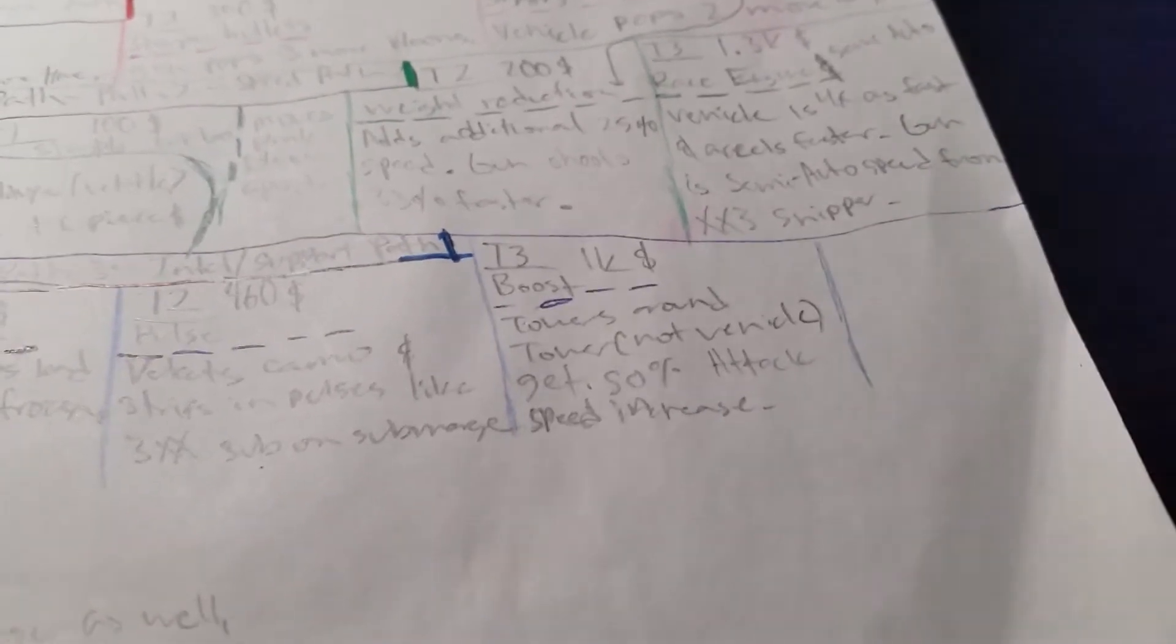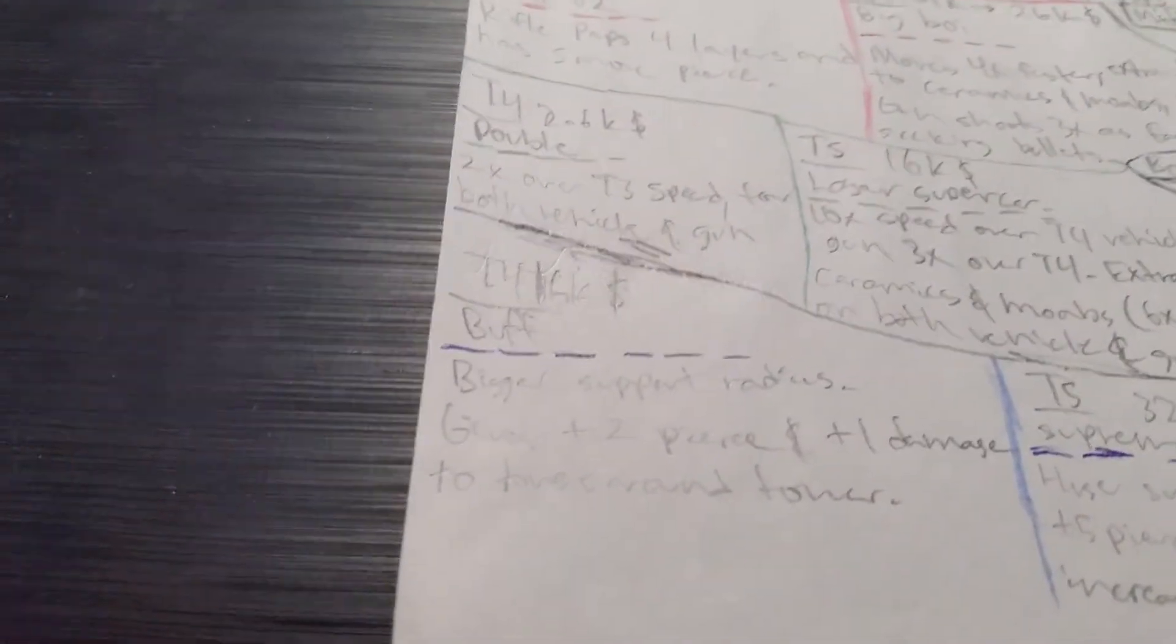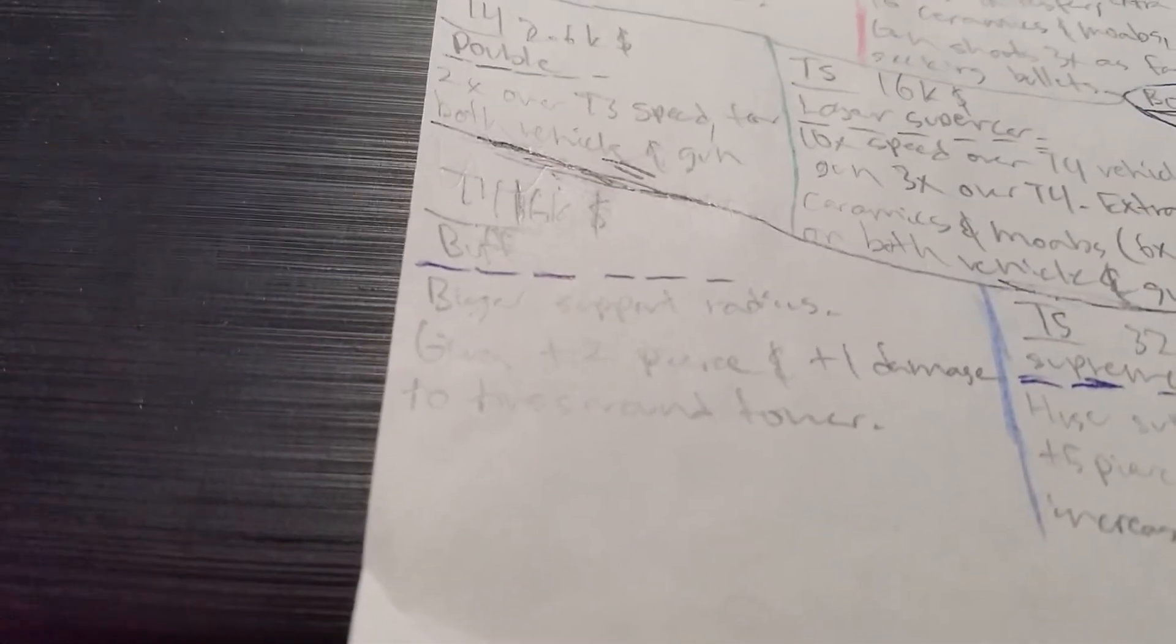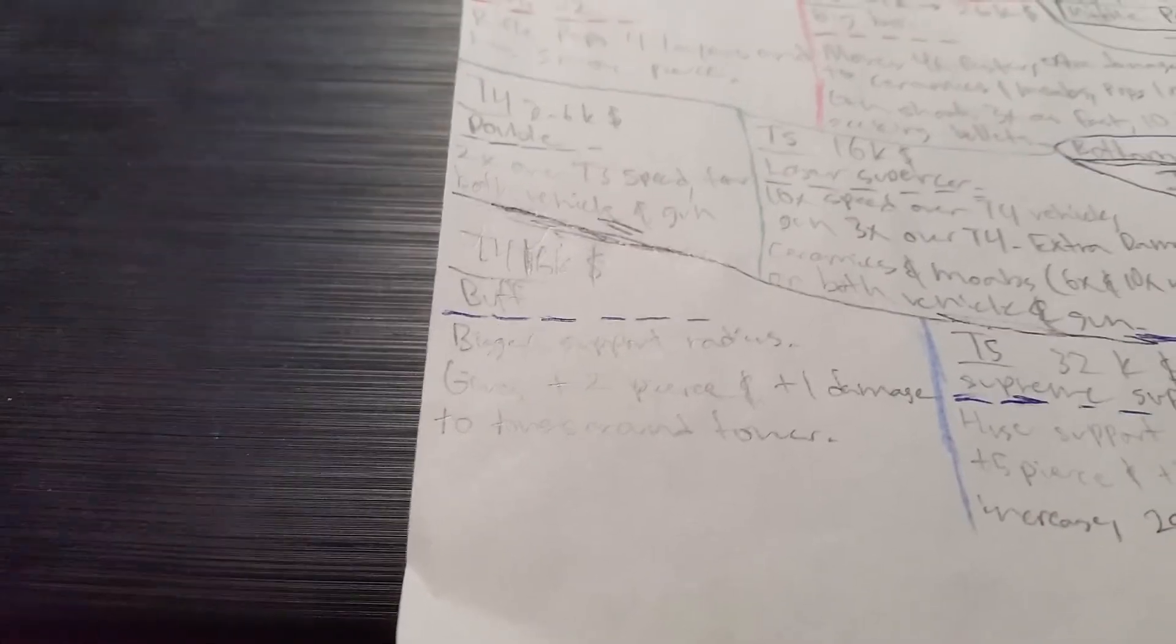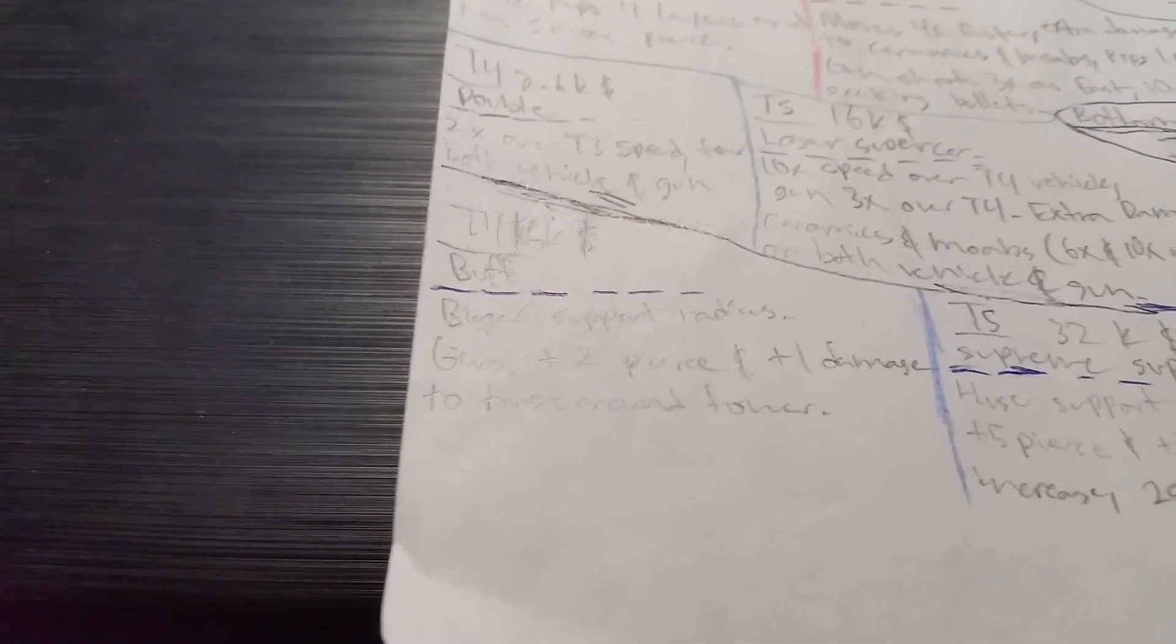Tier 3, 1,000 dollars, boost towers around the tower, not vehicle, 50 percent attack speed increase, which is a good amount. Tier 4, 16K dollars, buff bigger support radius, gives plus 2 pierce and 1 damage to towers around tower.